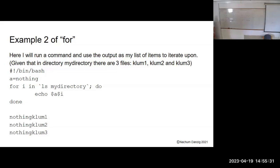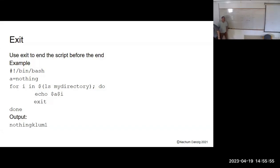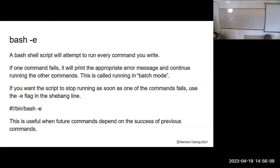Exit: use 'exit' to end the script before the end. I can write exit anywhere I want and it'll stop — you see it only printed the loop once. Also notice I used the dollar-parentheses form instead of backtick — that's also a form of running a command. They're the same thing.